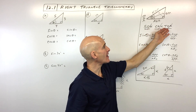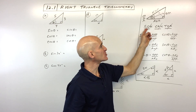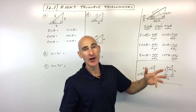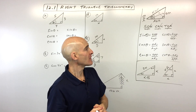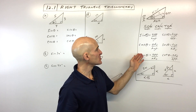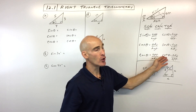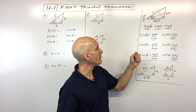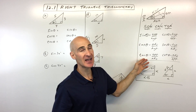If you can remember the acronym SOH-CAH-TOA, and just remember that it's the second letter divided by the third letter, you'll be able to remember those trigonometric ratios. The other three things you want to memorize are the cosecant, secant, and cotangent — the reciprocal functions of sine, cosine, and tangent.